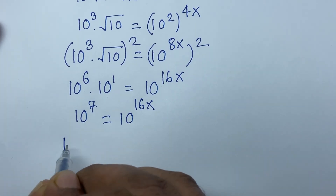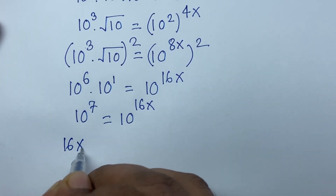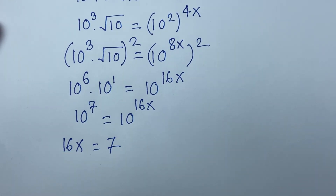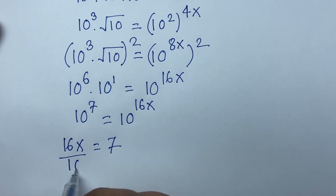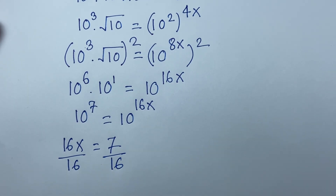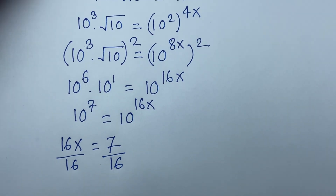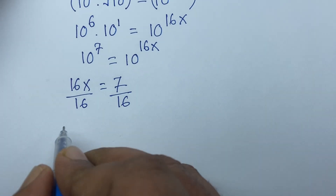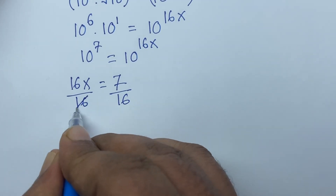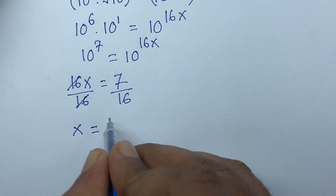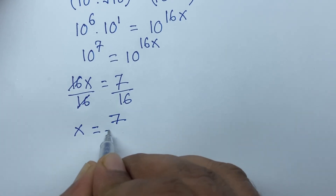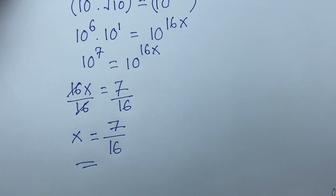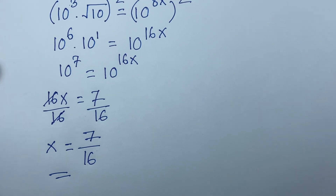So 16x is equal to 7. I divide both sides by 16, so x is equal to 7 over 16. This is the value of x in this question.